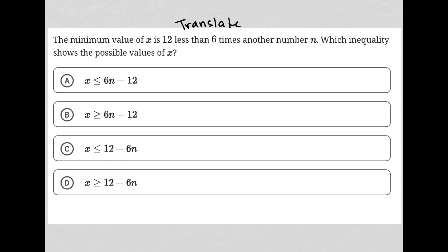The minimum value of X, I'm going to just say X, is equal to 12 less than—so less than what? Something minus 12. What is that something? 6 times another number N, so 6N minus 12. So X, the minimum value of X, I'll just put X arrow down to represent minimum value, is equal to 6N minus 12.